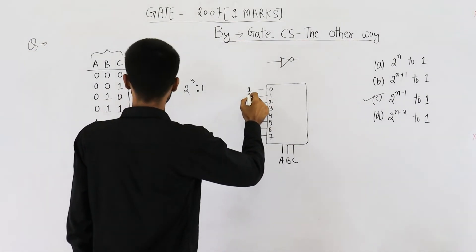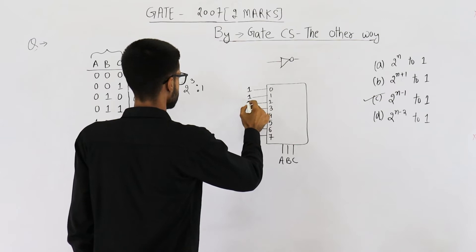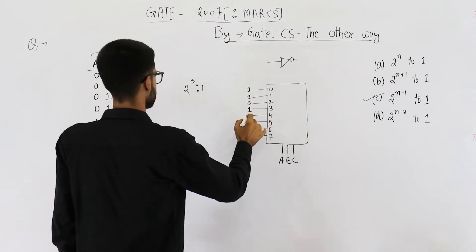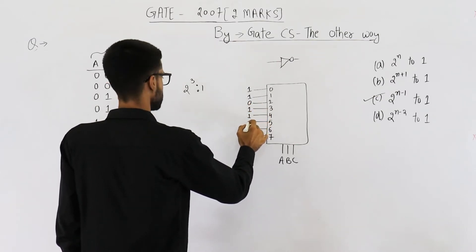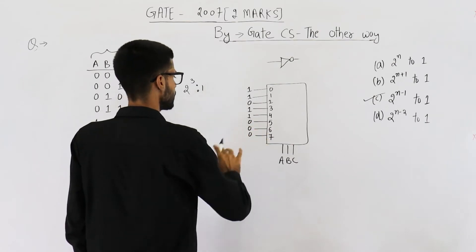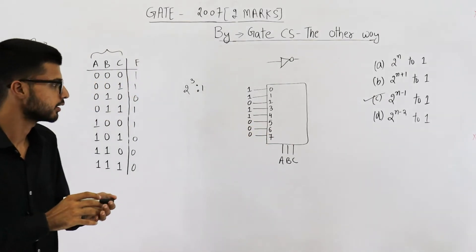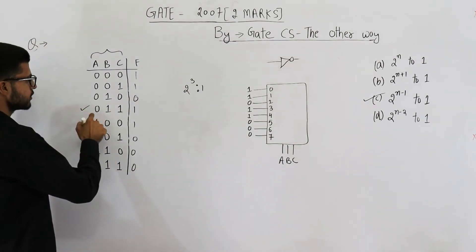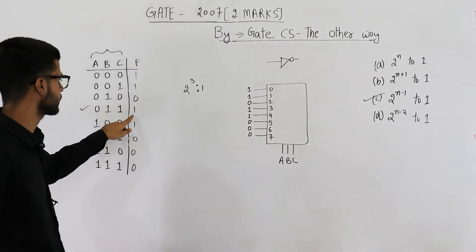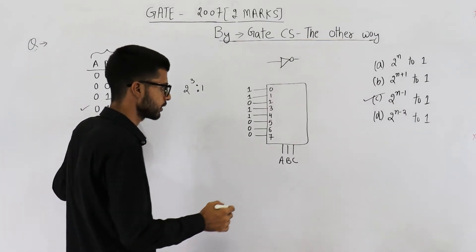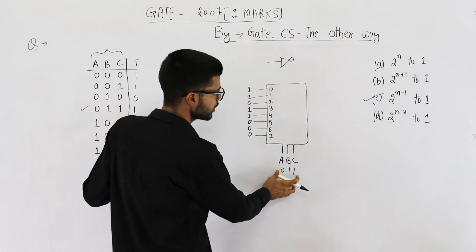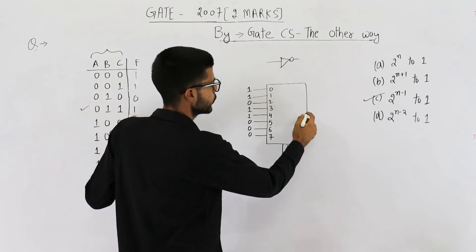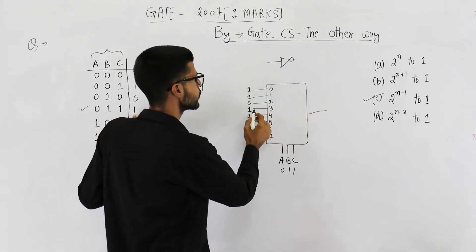So this is one one zero one one triple zero. That's it. The function is implemented. You can see. You can verify it for any input. On zero one one that is on three the output must be one. So zero one one. This multiplexer will select its third input as the output and third input as one.